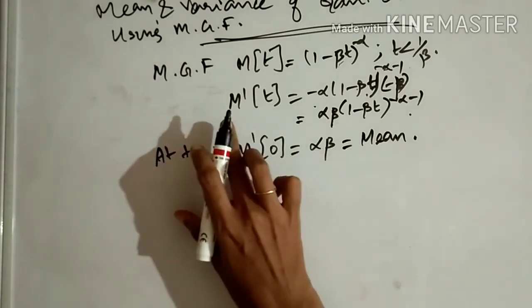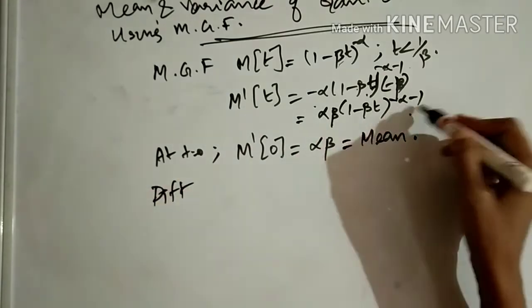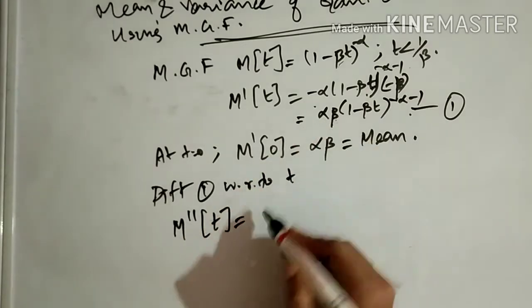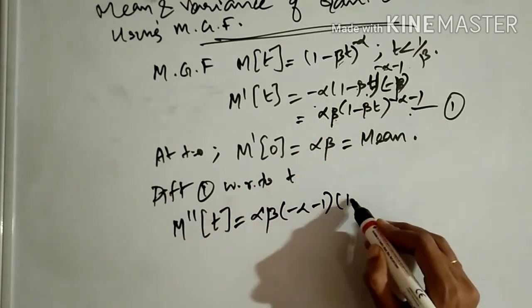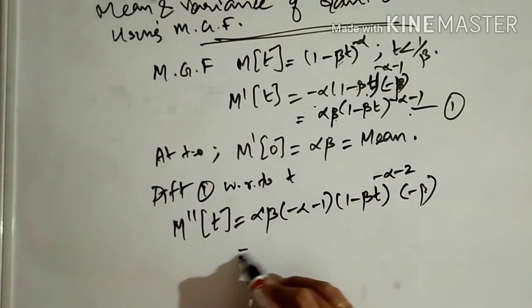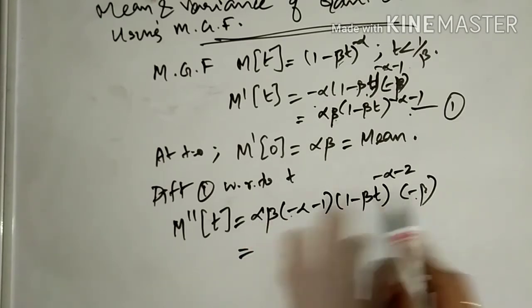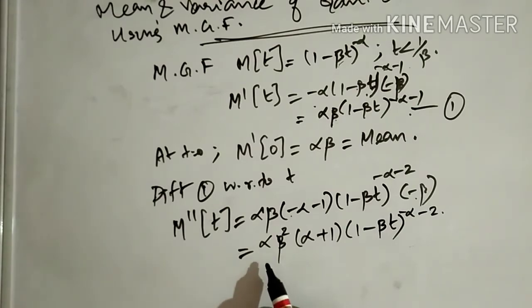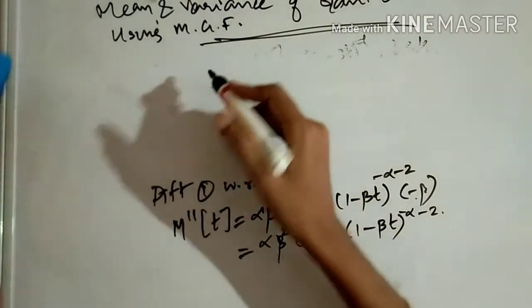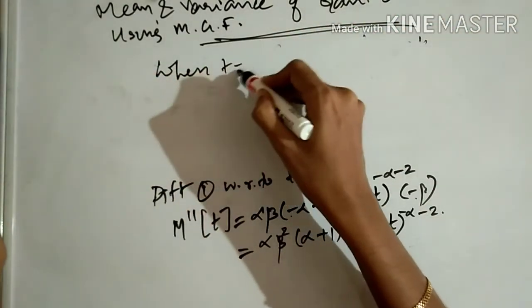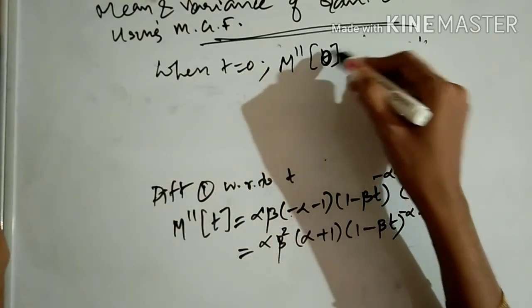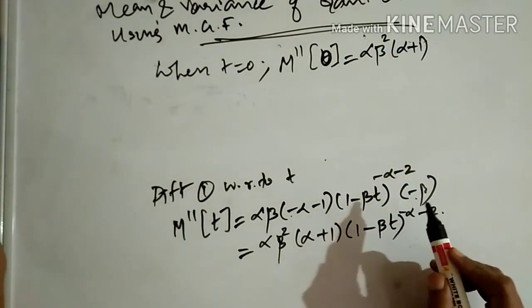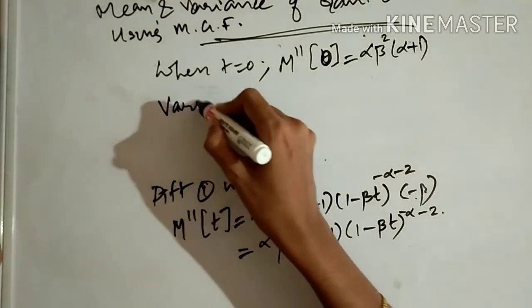For variance, differentiate M'(t) again. M''(t) = αβ times (-α-1)(1 - βt)^(-α-2) times (-β), which gives αβ²(α+1)(1 - βt)^(-α-2). At t = 0, M''(0) = αβ²(α+1) times 1 = αβ²(α+1).